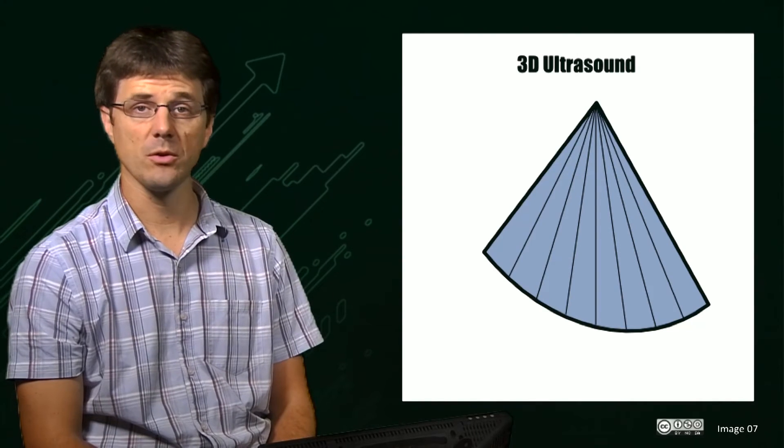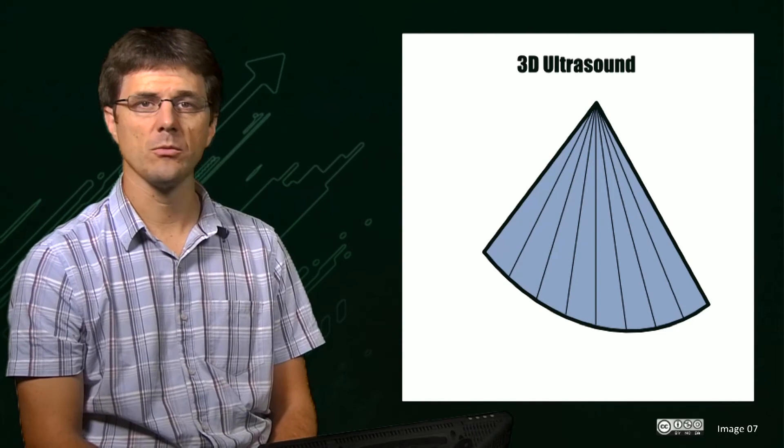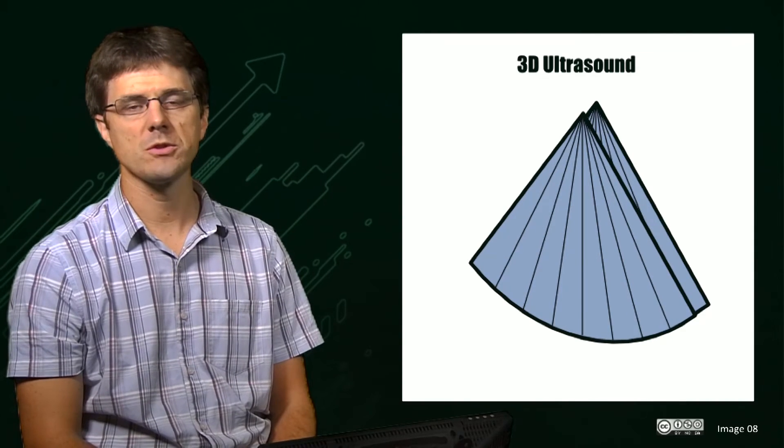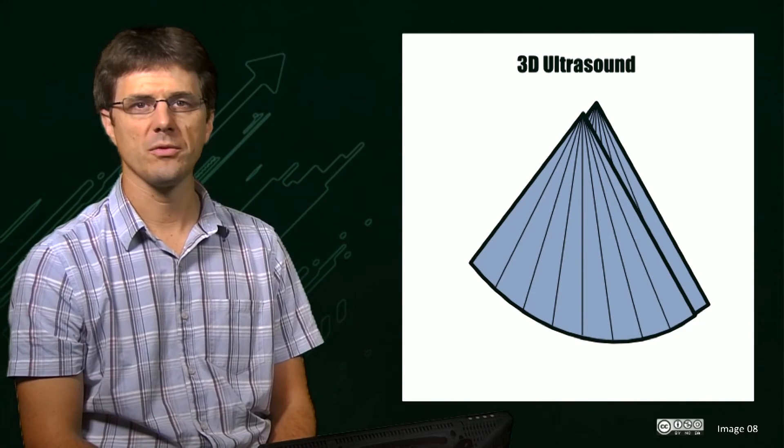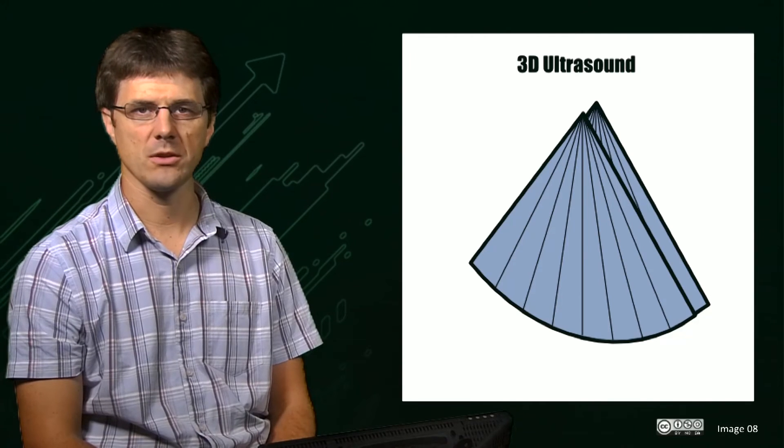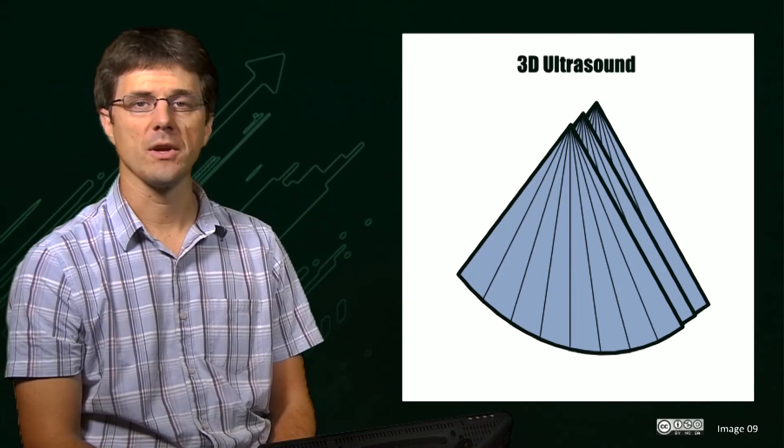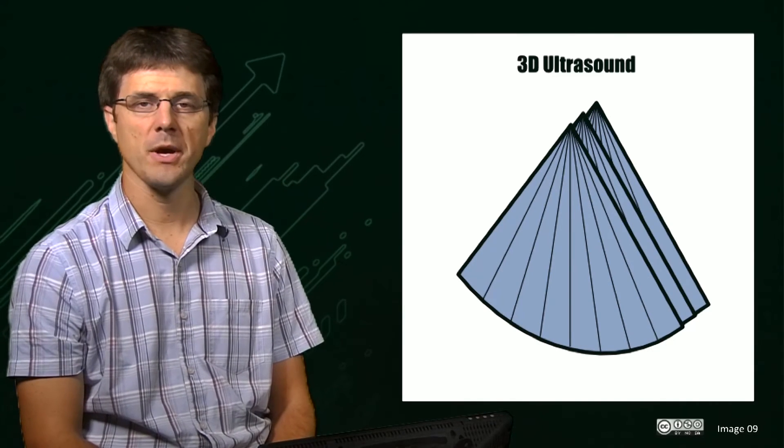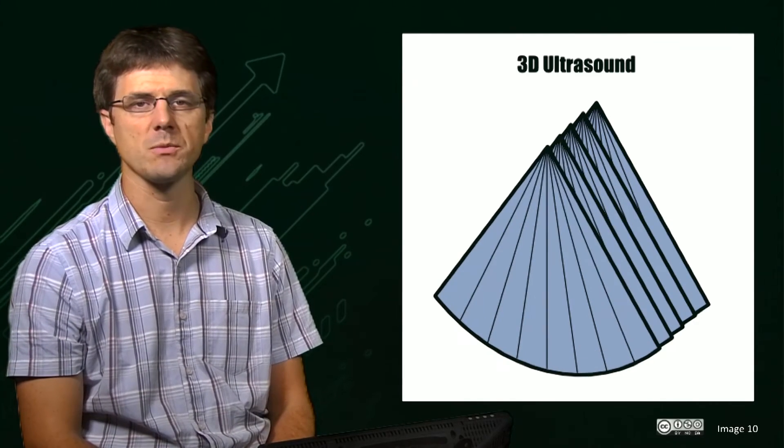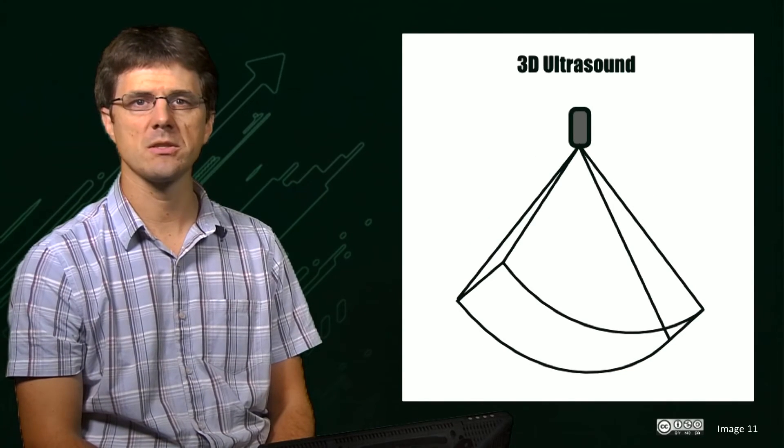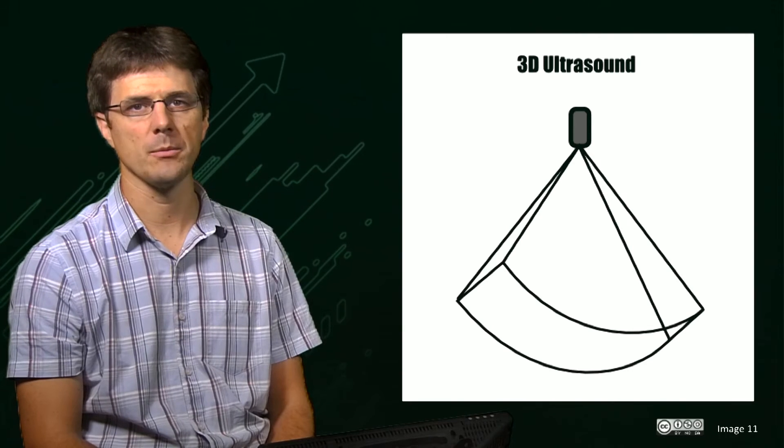In its simplest form, 3D ultrasound is little more than a series of 2D ultrasound planes. In early systems, the multiple 2D acquisitions were performed by manually moving the ultrasound transducer inside the head of the probe. However, in nearly all modern equipment, this manual technique has now been replaced with phased array transducers that have no moving parts and instead generate the desired beam with multiple smaller elements.